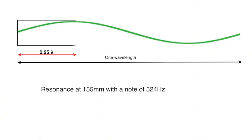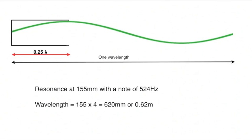Remember that the 155 millimeters represents a quarter of a wave. A whole wave therefore, quite obviously, is four times that length. That is 0.62 meters.